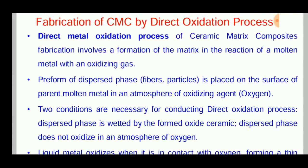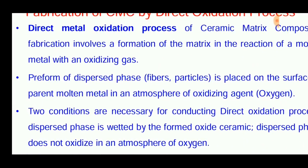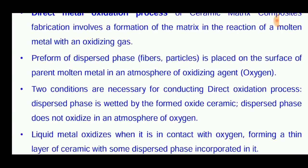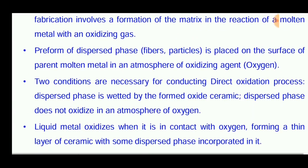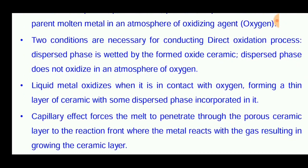The direct metal oxidation process of ceramic matrix composites involves the formation of a matrix through a reaction of a molten metal with an oxidizing gas such as oxygen, helium, or nitrogen. The preform is placed on the surface of the parent molten metal in an atmosphere of the oxidizing agent.